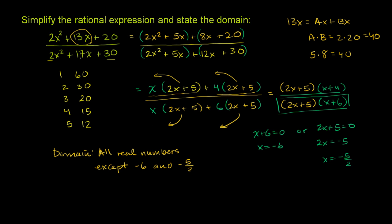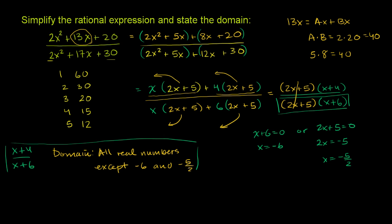These values make the expression undefined by making the denominator 0. Now we can cancel the (2x + 5) factor, since we know x ≠ -5/2, leaving the simplified expression x + 4 over x + 6. But we must keep the same domain — all real numbers except -6 and -5/2 — because without that restriction, x = -5/2 would appear valid, and the simplified and original expressions would not be identical.